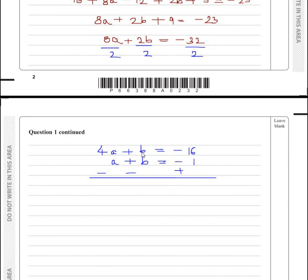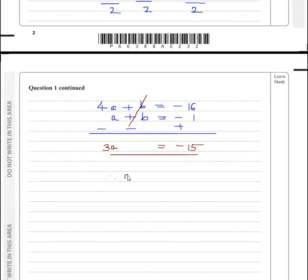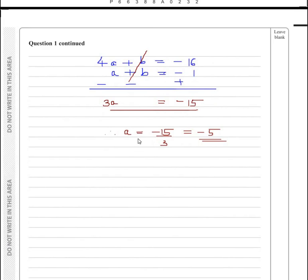As we can see, +b and -b, they both get cancelled. 4a - 1a gives you 3a = -16 + 1 which gives -15. Therefore, a value is equal to -15 divided by 3, thus giving you -5. We have got the value of a.